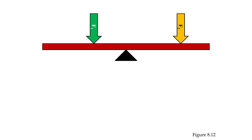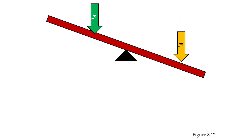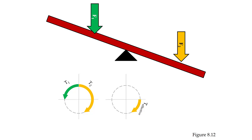Similarly, if F2 is further away from the axis of rotation, or that pivot point, than F1, then we are going to have an angular acceleration that causes our seesaw to rotate in the clockwise direction. The torque created by F2 is larger than the torque created by F1, so when we subtract one torque from the other, we're left with a residual or effective torque in the clockwise direction, and so we also have an angular acceleration in that clockwise direction.